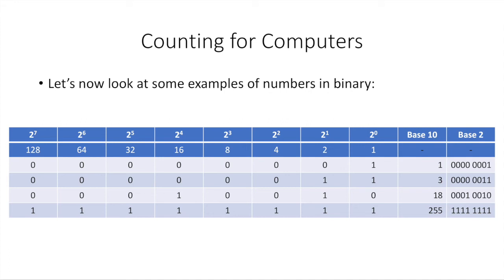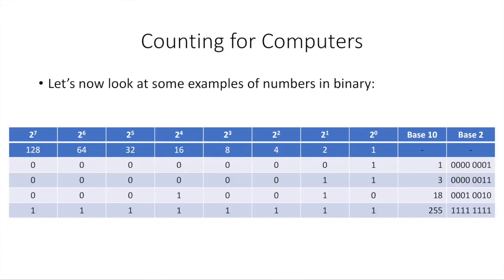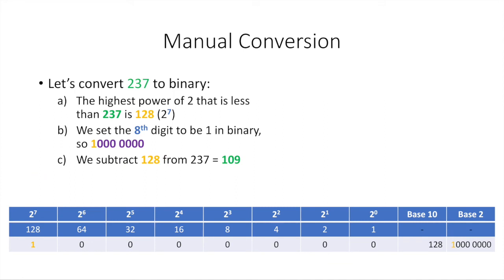If you add 1 to 255 in binary, you get a 1 followed by eight zeros — that's 256 — but it wouldn't fit in eight digits anymore. To convert from binary to decimal, you look at the powers of 2, add up those corresponding to positions with a 1, and that gives you the total. Now let's go the other way: from decimal to binary.